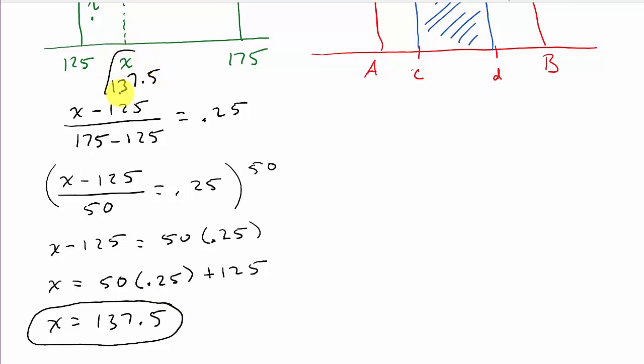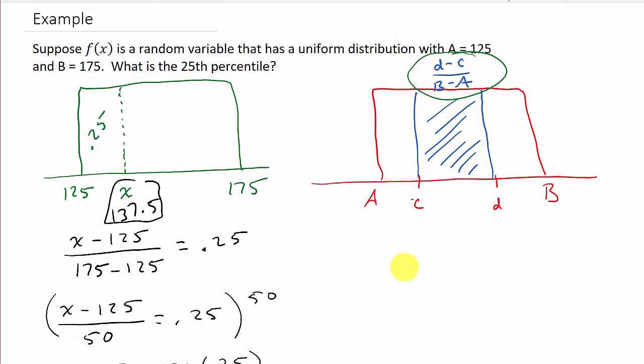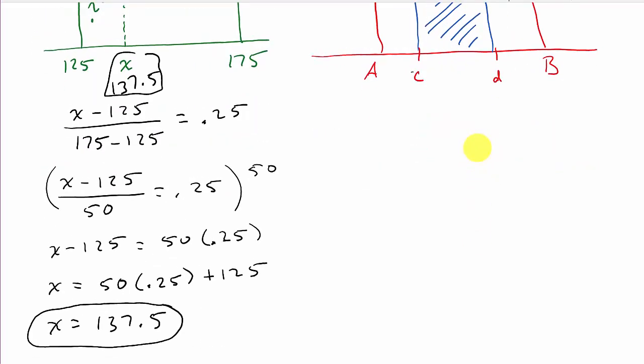That would be this number here, 137.5, that's X. So if I put the 137.5 in for D, the 125 in for C, and then the 175 and 125 in for B and A, I would get 0.25.